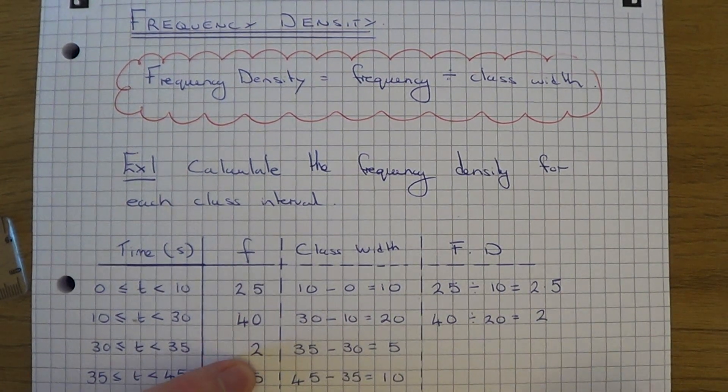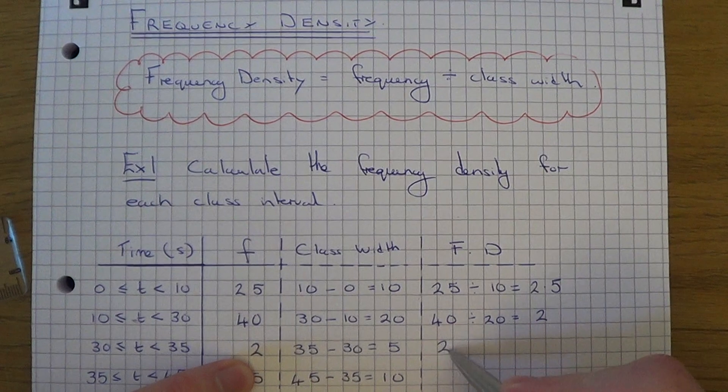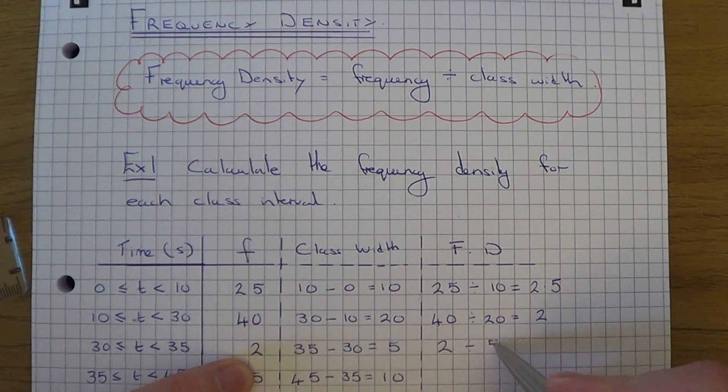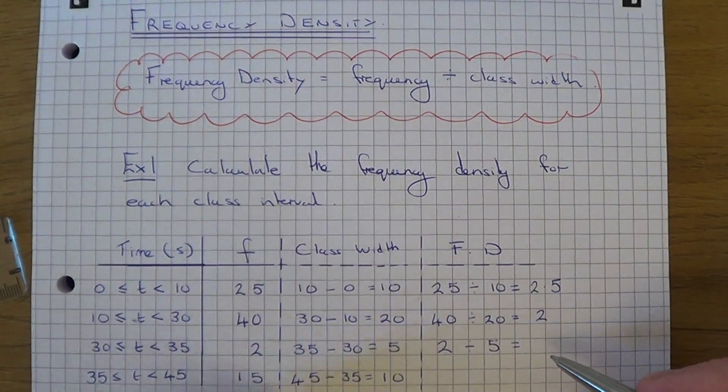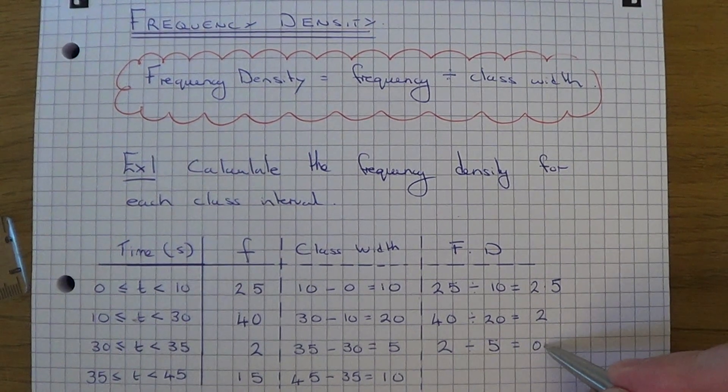For the third group, it's going to be 2 divided by 5, so make sure you do it in this order. That will give you an answer of 0.4.